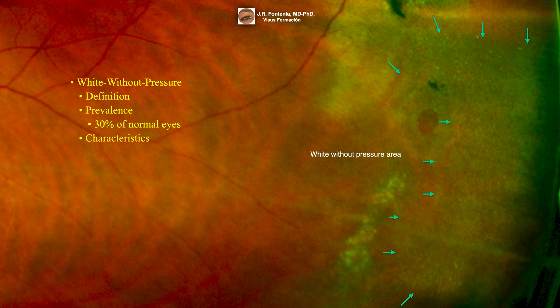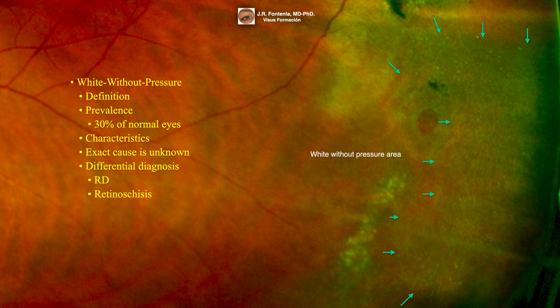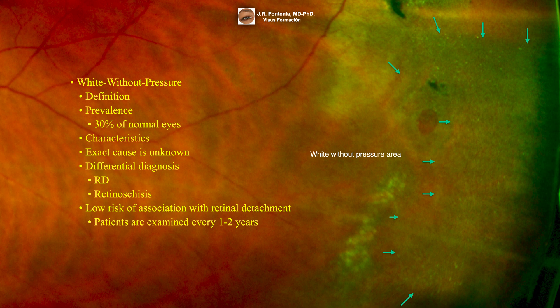Whiteness further accentuates with scleral depression and margins are sharply demarcated from normal retina. The exact cause is unknown. One school of thought states it to be a manifestation of peripheral vitreous traction, while another believes it to be a simple abnormal reflex from a structurally normal vitreo-retinal interface. It frequently causes confusion with subclinical retinal detachment and retinoschisis, but indentation clearly reveals that the retina is still opposed to the retinal pigment epithelium. No treatment is necessary, and there is a low risk of association with retinal detachment, so patients are examined every one or two years.